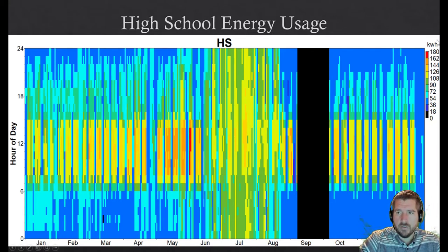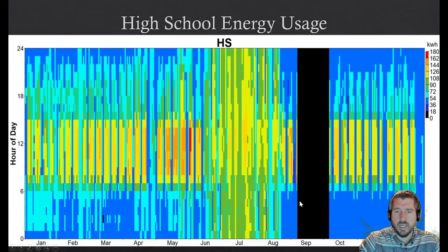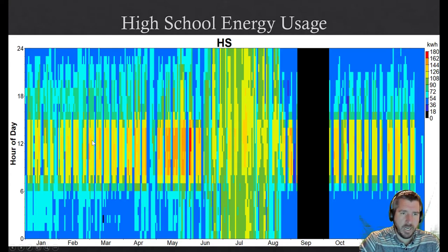This is a plot of how much electric energy — in kilowatt hours — this high school uses. That's what the 'HS' stands for. It's the same setup: hour of the day on one axis and month of the year on the other. The only difference is it's missing some data for September — this whole black block is just a missing data point. There are a couple of cool things you can see right away: there are dark blue lines that happen periodically. Pause the video and see if you can figure out what's going on.